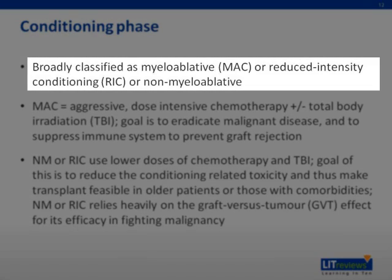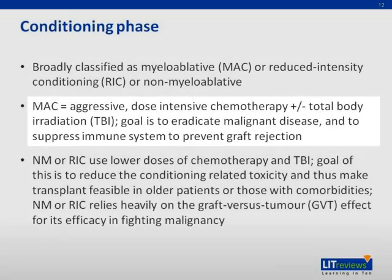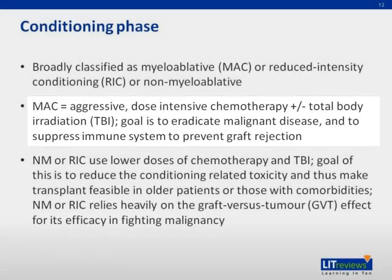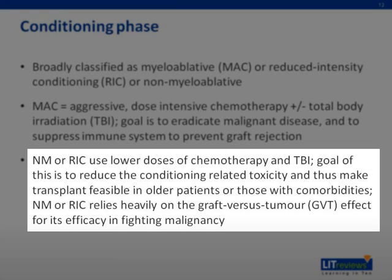The conditioning regimens used can be broadly divided into myeloablative conditioning, reduced intensity conditioning, or non-myeloablative conditioning. Myeloablative conditioning involves dose-intensive chemotherapy with or without total body radiation, and the goal is to eradicate disease in addition to suppressing the recipient immune system to prevent graft rejection. A reduced intensity or non-myeloablative conditioning regimen uses lower doses of chemotherapy and total body radiation to reduce toxicity, and relies mainly on the graft-versus-tumor effect to fight residual disease.